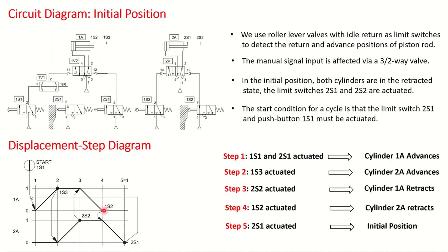From 1S2 we have an arrow indicating the retraction of the second double-acting cylinder begins. It reaches back to 2S1, shown as step 5 equals step 1, meaning we are at the beginning of a new cycle and the pneumatic circuit is ready to start again. That is how we read a displacement step diagram. Sometimes we have a drawing and must write the displacement diagram; other times we have a problem statement and must provide both the displacement step diagram and the pneumatic circuit.